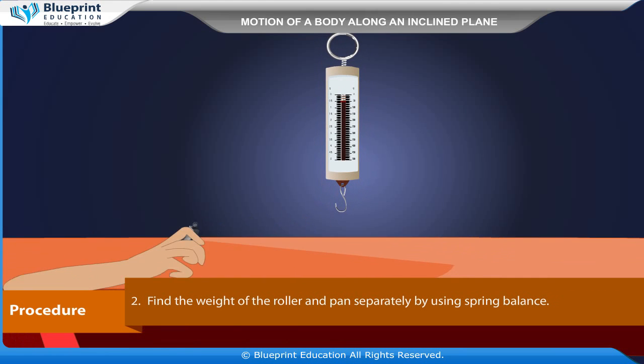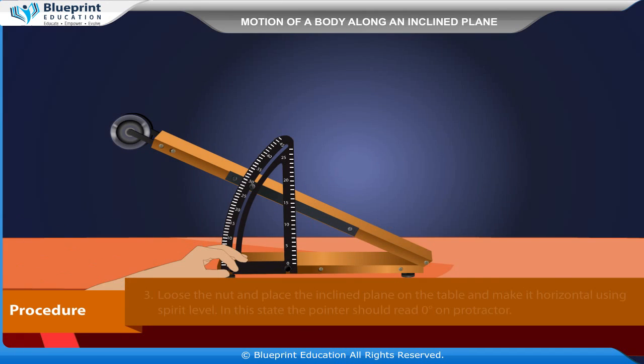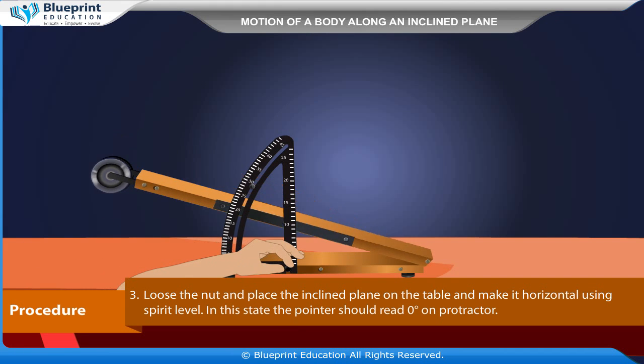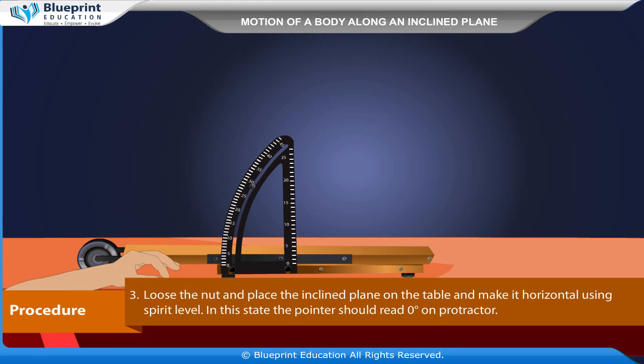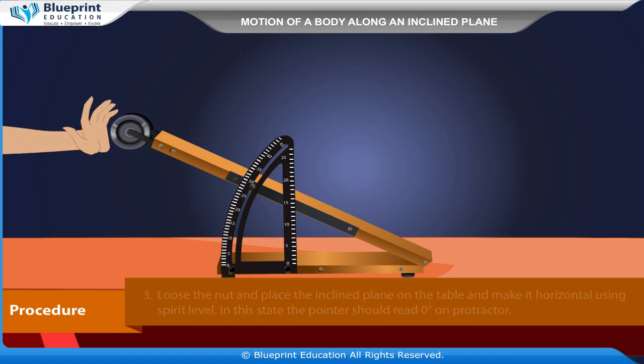Find the weight of the roller and pan separately by using spring balance. Loosen the nut and place the inclined plane on the table and make it horizontal using spirit level. In this state, the pointer should read 0 degree on protractor.